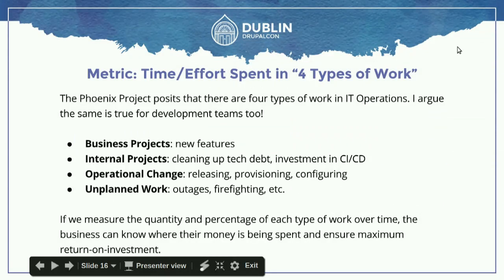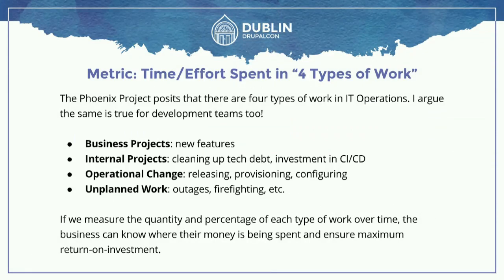So let's get into the metrics. The first metric I want to talk about is the time and effort spent in the four types of work. How many of you read The Phoenix Project? So if you haven't, you're in the DevOps track — I highly recommend you pick up a copy when you get home. In The Phoenix Project, they talk about there being four types of work that an IT team does, and I argue it's the same for development.